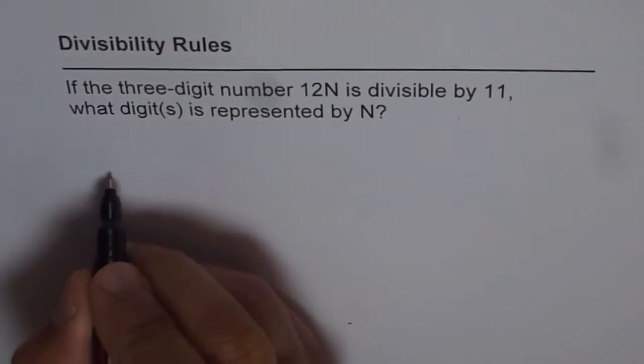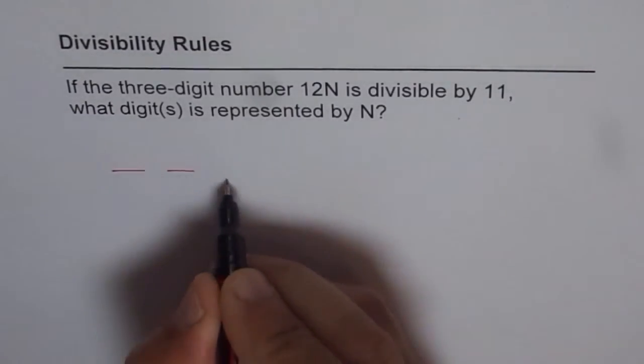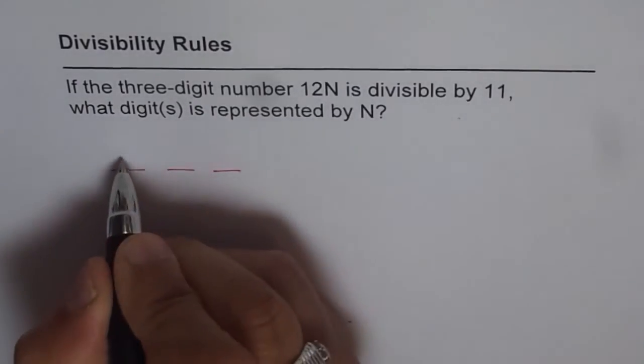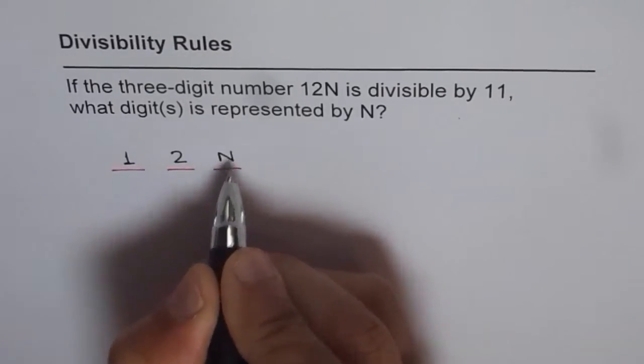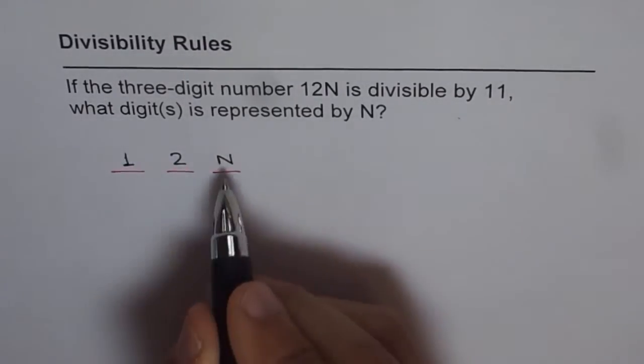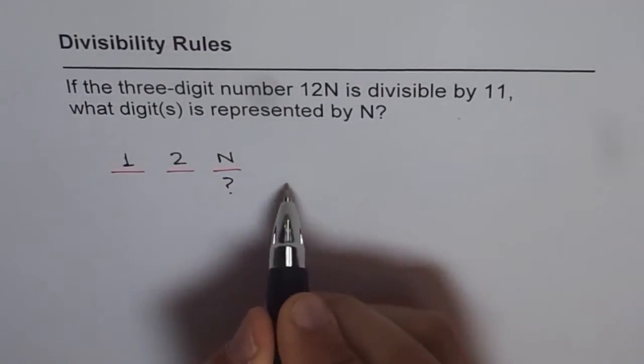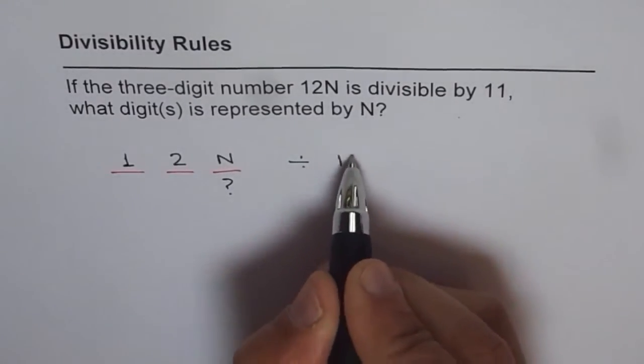We are given a three-digit number: 1, 2, and N. The first digit in the hundreds place is 1, the tens place is 2, and N is not known to us. We need to find the value of N so that the number is divisible by 11.